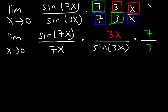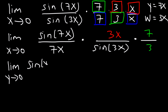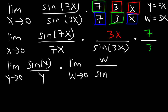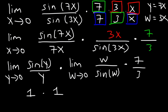Let y equal 7x and w equal 3x. We have the limit as y approaches 0 of sine y over y, times the limit as w approaches 0 of w divided by sine w, times 7 over 3. The first expression equals 1, the second expression is also 1, so the final answer is 7 over 3.